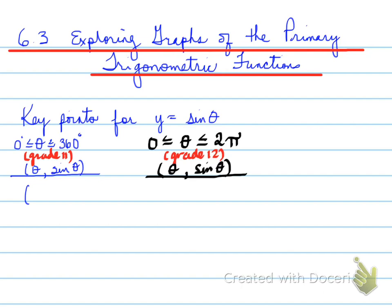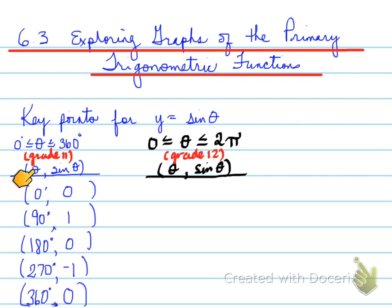Let's recap what we did in grade 11. Grade 11 was 0, 90, 180, 270, and 360. And these were the corresponding y-coordinates.